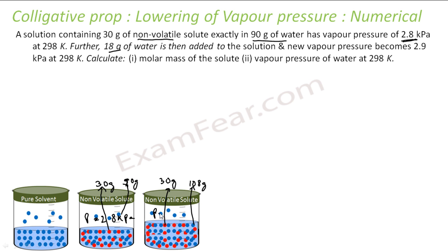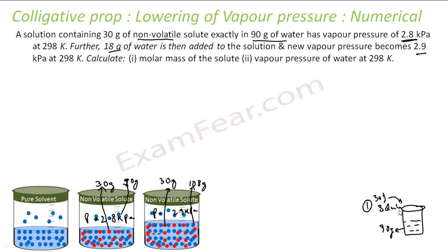The vapor pressure has changed and is now 2.9 kPa. So in step one: 90 gram water plus 30 gram solute gives vapor pressure 2.8 kPa. In step two: add 18 gram more water (total 108 gram), giving new vapor pressure 2.9 kPa. We need to find the molar mass of solute and the vapor pressure of pure water at 298 K.